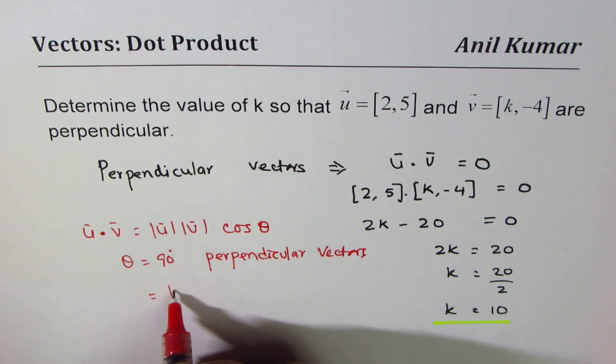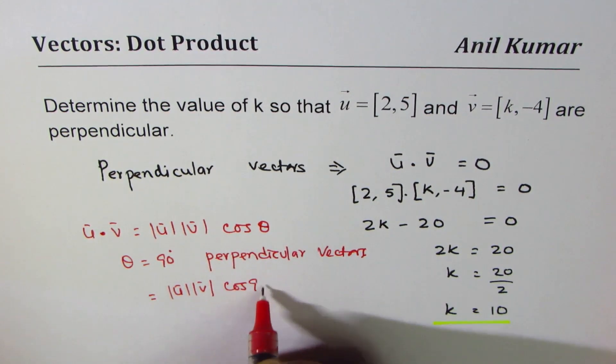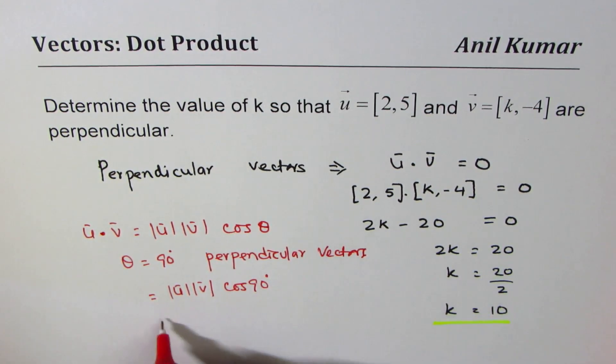So we can write this as magnitudes of v and u, cos of 90 degrees. Cos of 90 degrees is 0, so that results in 0. 0 times anything is 0.